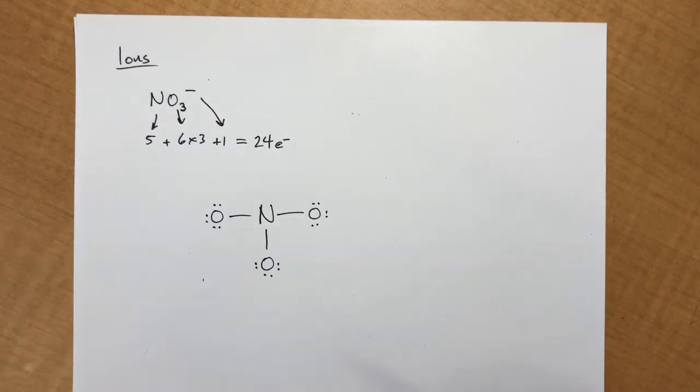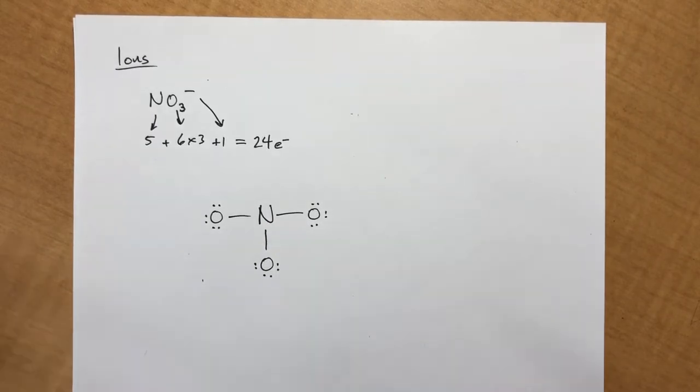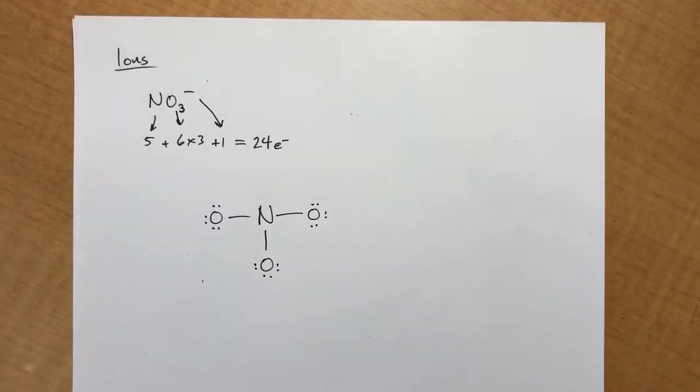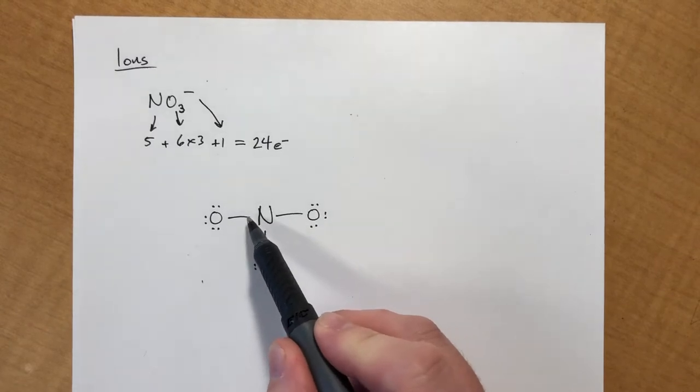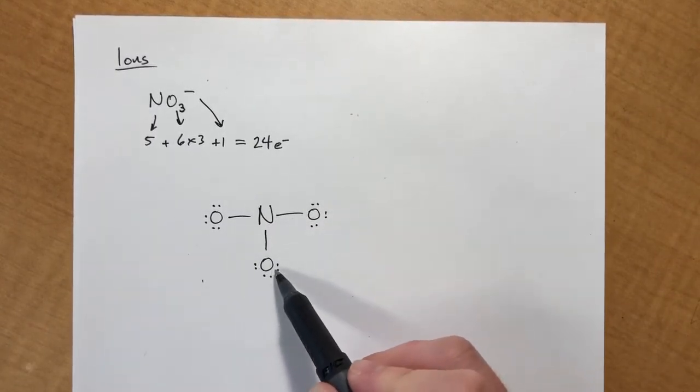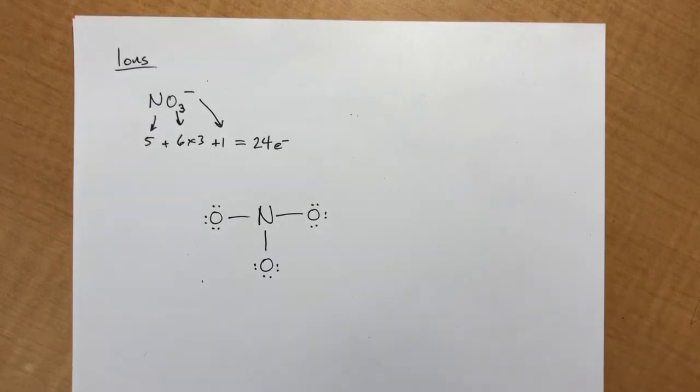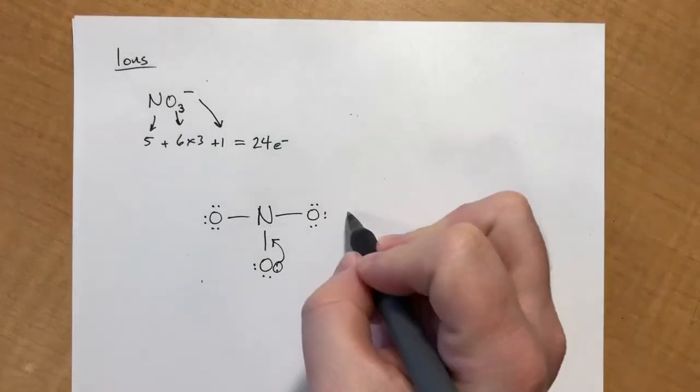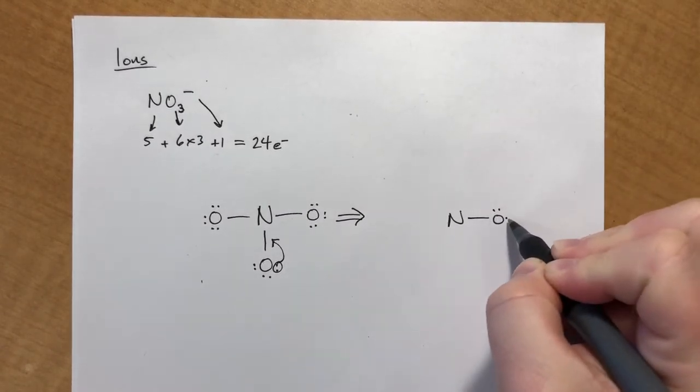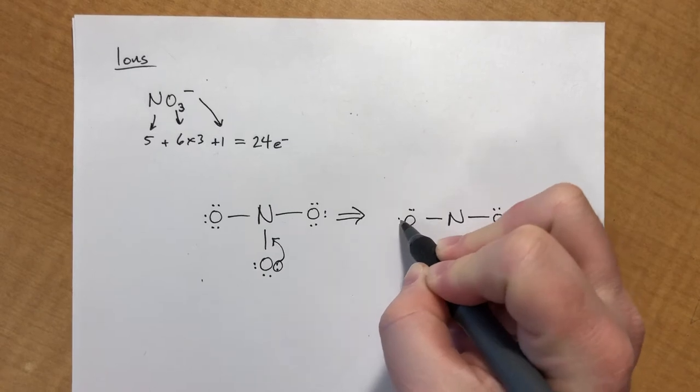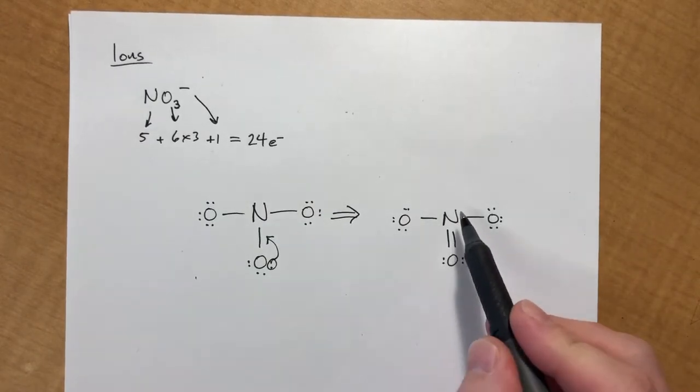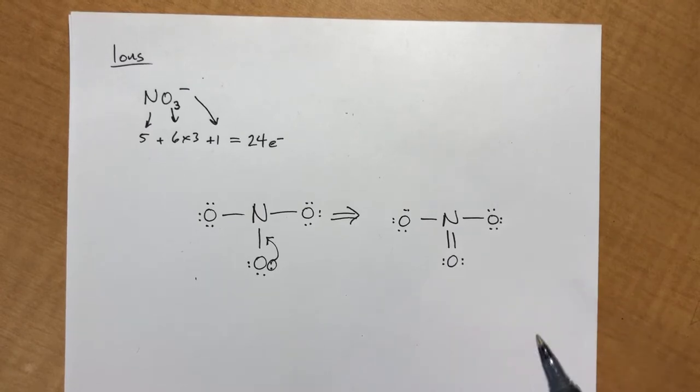Step 3 would have told us to put any remaining electrons in the middle. We can't do that. Step 4 says to check for octets. This has an octet, this has an octet, this has an octet, this does not. So the next step is to form a double bond if we need to. This nitrogen has six electrons around it and it needs eight, so we're gonna have to steal one of these lone pairs. It doesn't really matter which one we pick because they're all equivalent. Essentially this lone pair is gonna be forced down to form a double bond.